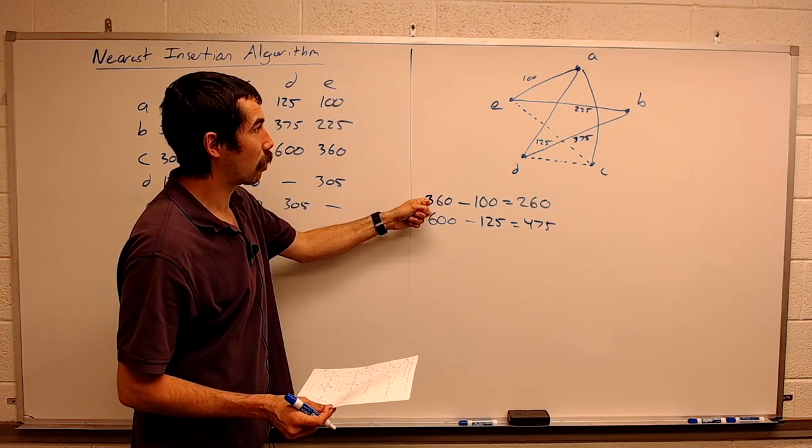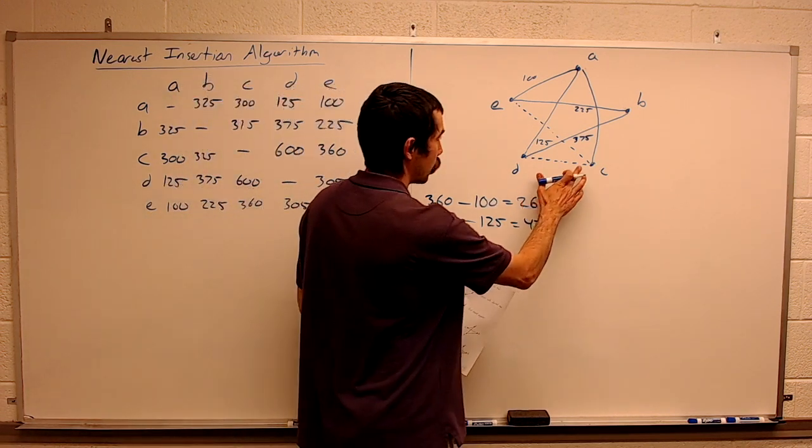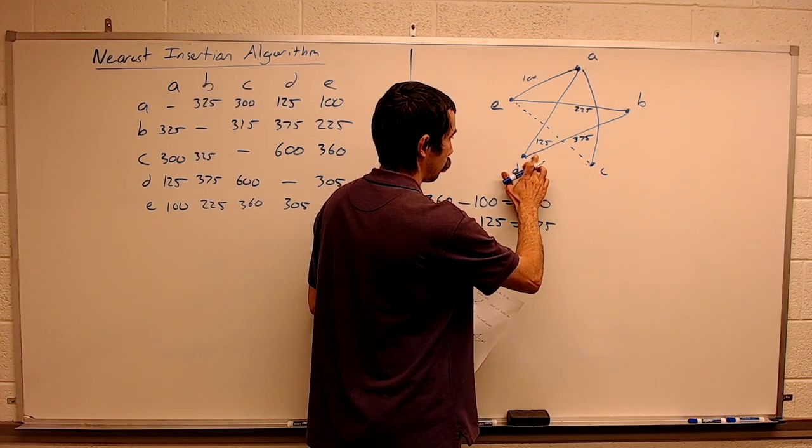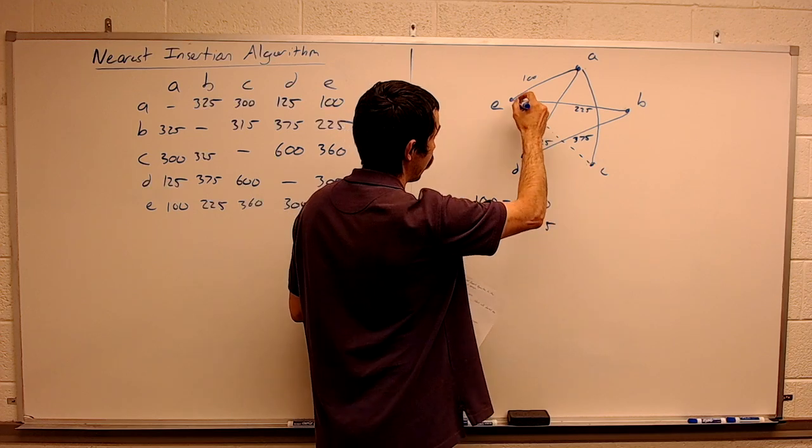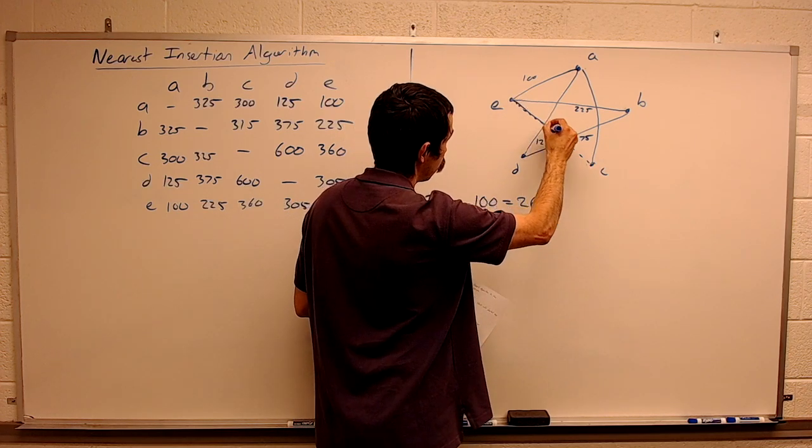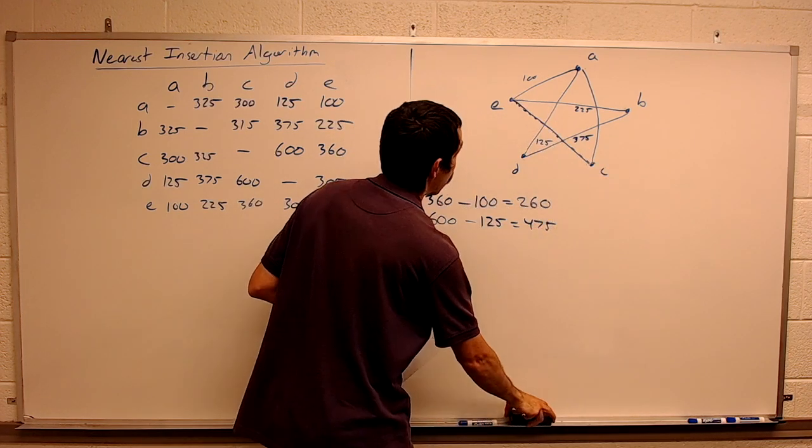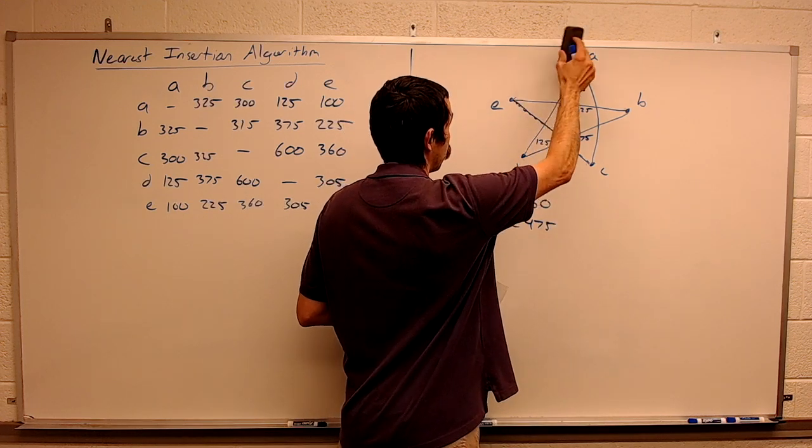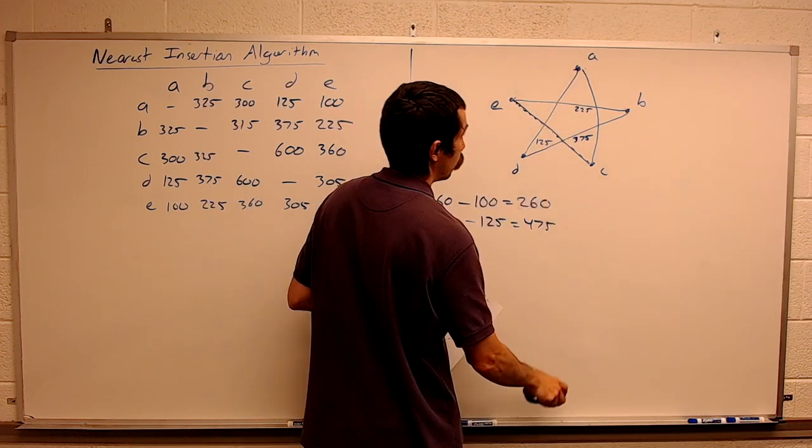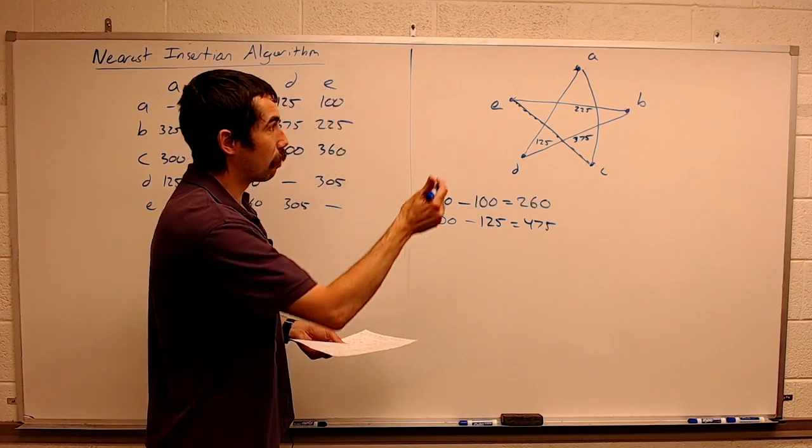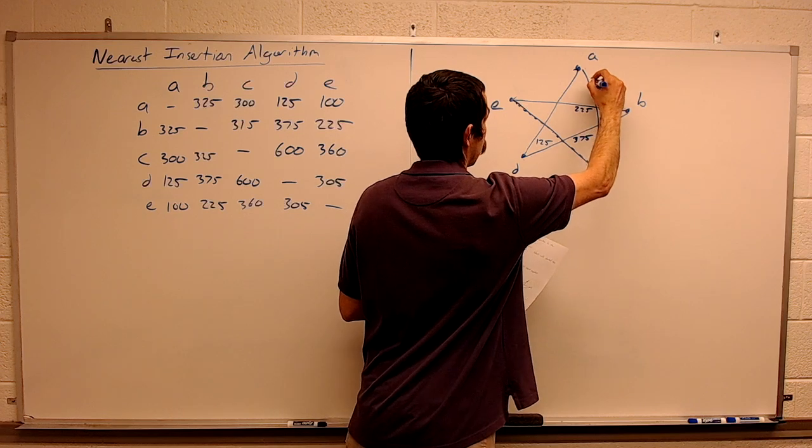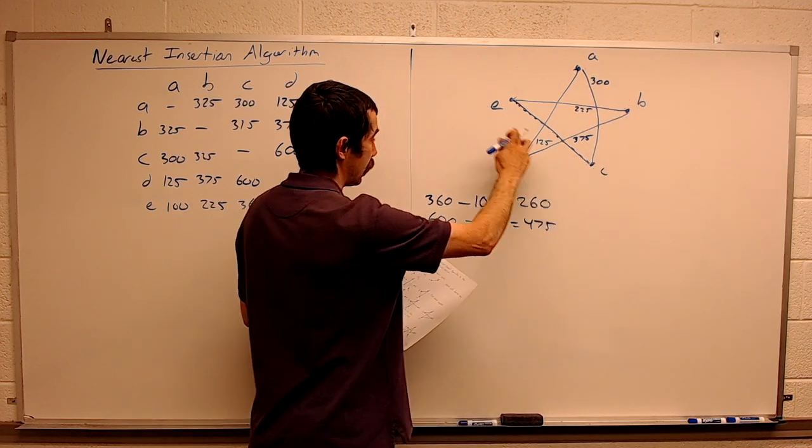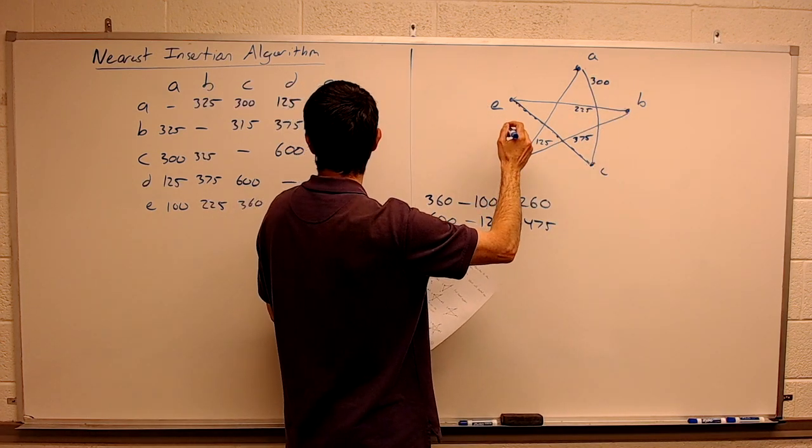That says we are going to, we're not going to include this one. We are going to include CE and we will erase EA. And now let me just, I missed some of the labels, AC is 300, CD is 360.